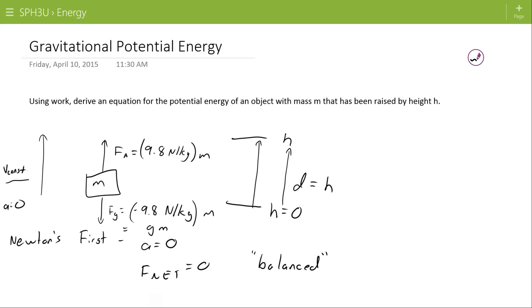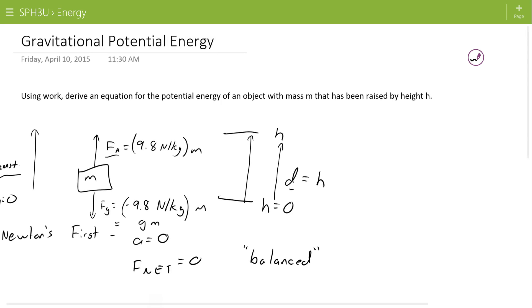So now we have an applied force and we have a distance. We're ready to use our work formula: work equals force times distance, which is going to be equal to 9.8 Newtons per kilogram times the mass times the height, or some people like to leave this as g and say that this formula is mgh.